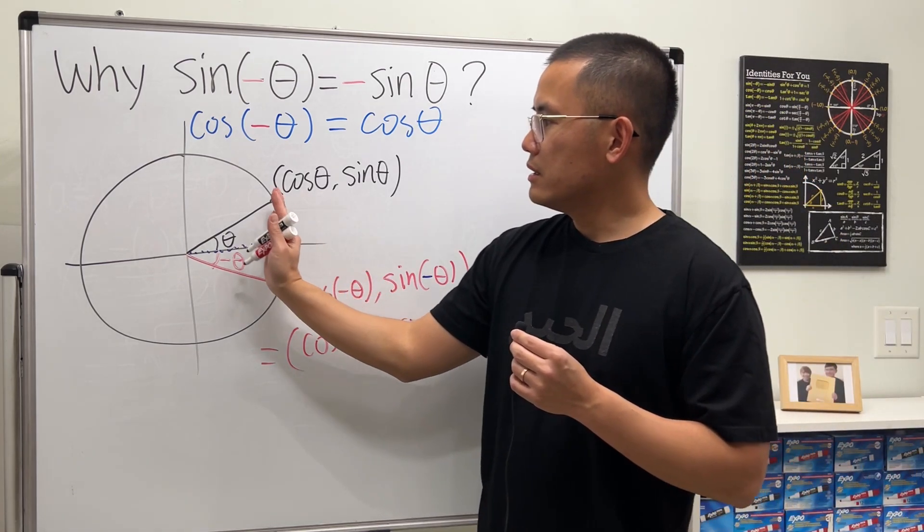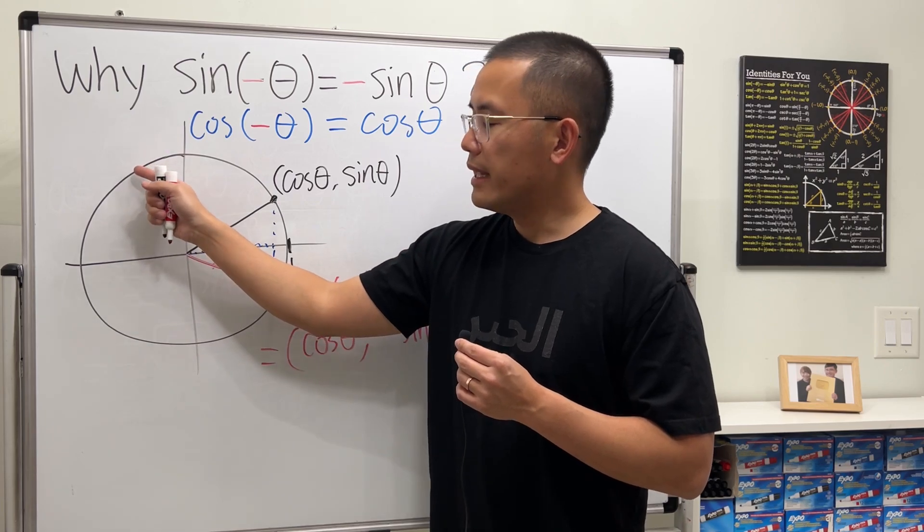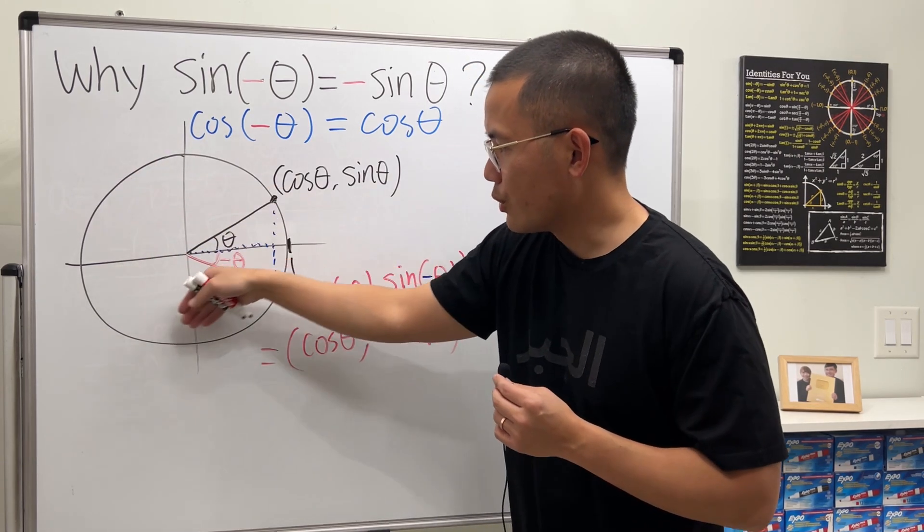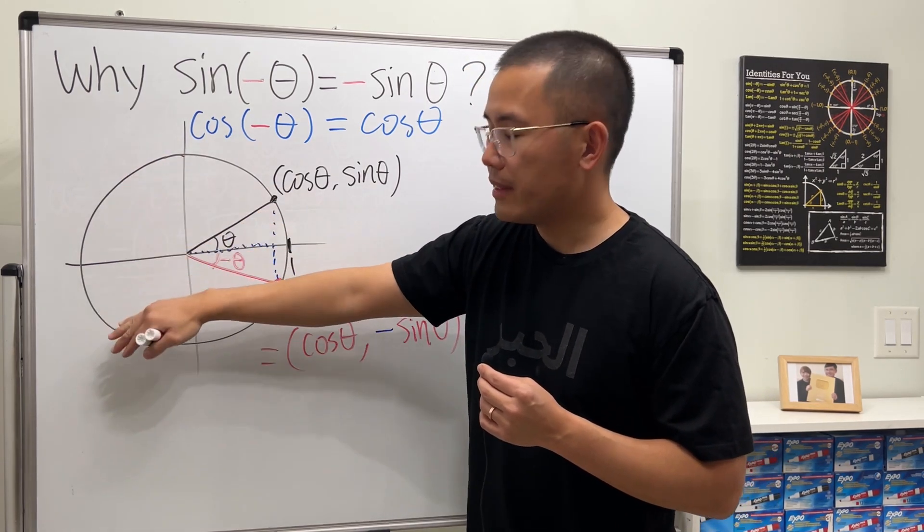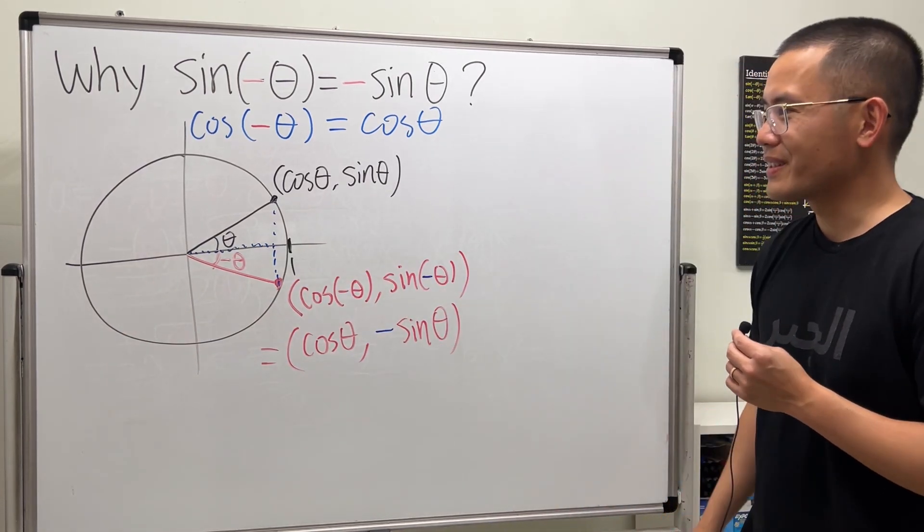And in fact, theta can be anywhere if you put the theta all the way from here to here. And then when you have negative version, you go the other way. It's an up and down reflection. It's the same idea. So this picture works for all angles.